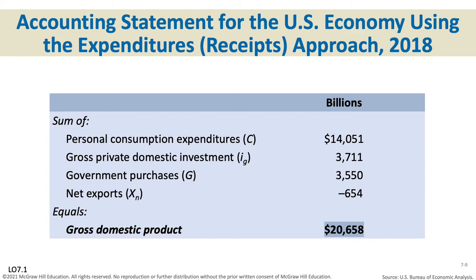Personal consumption expenditures — denoted with a C — is all the money spent by households: houses, cars, insurance, haircuts, whatever households want to buy. This is all the money consumers spend. You'll have data charts giving you this information, so you'll look for personal consumption expenditures and substitute that in for C in the formula.